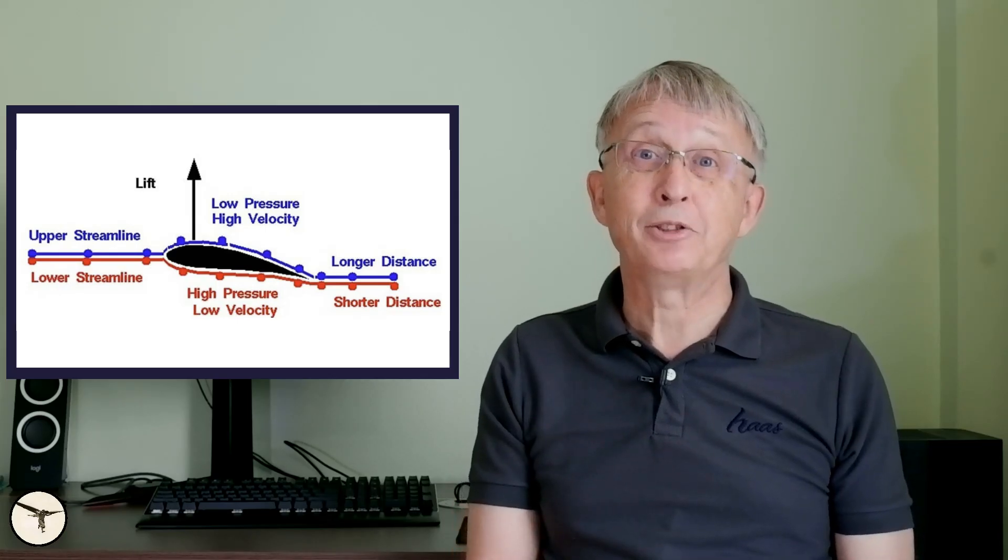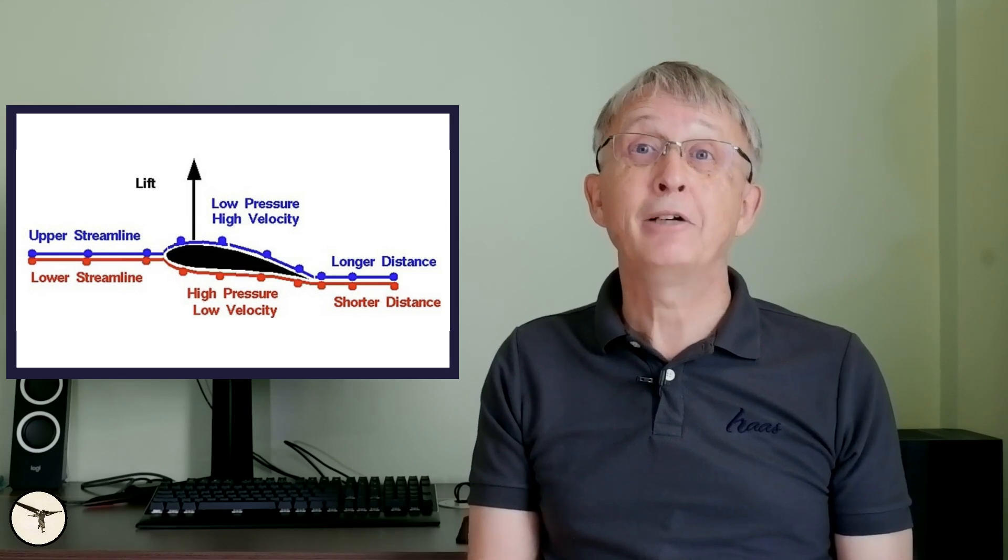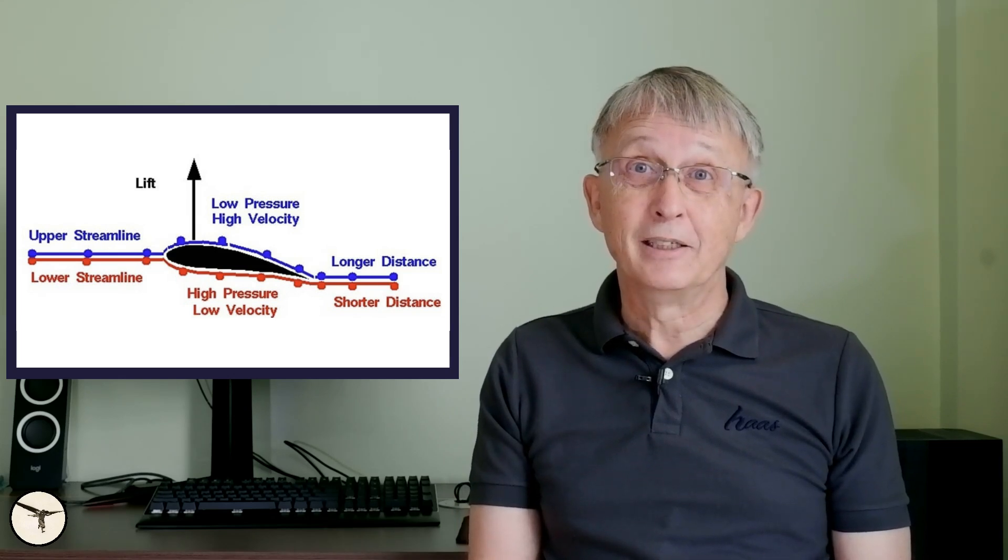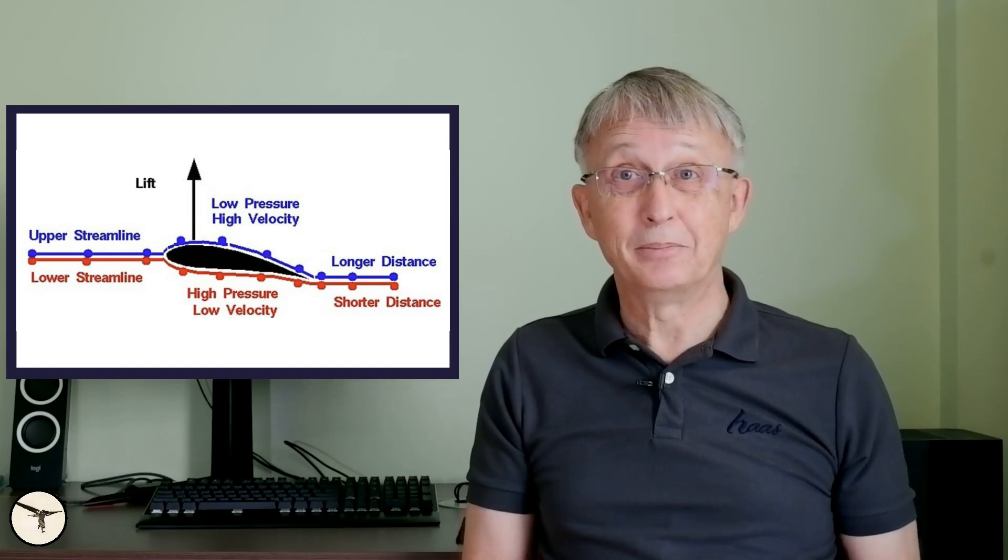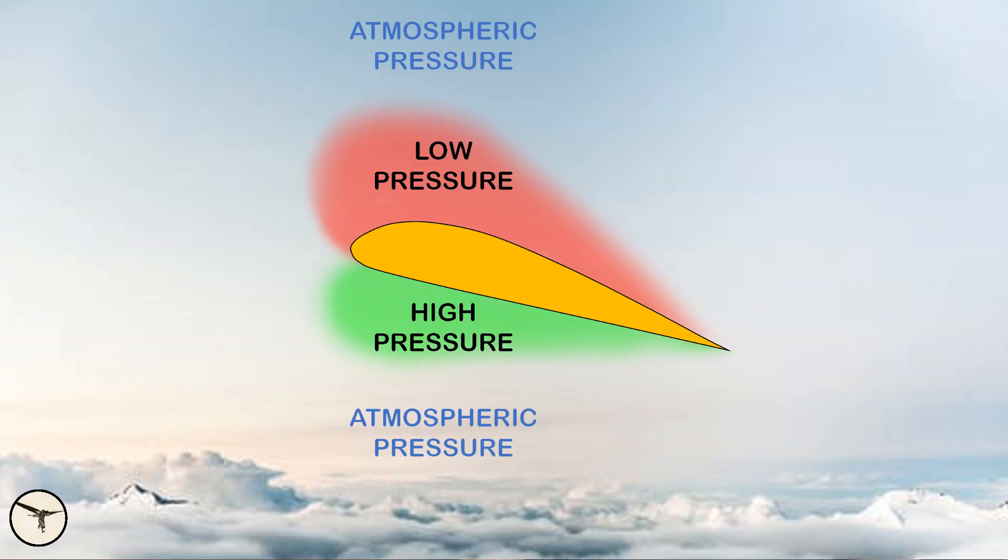Very often the explanation is illustrated like this. But air doesn't behave like that. How many errors do you see? I will give you the answer at the end of the video. It is correct that the static pressure in an air stream is reduced when the velocity increases. This happens because of conservation of energy.